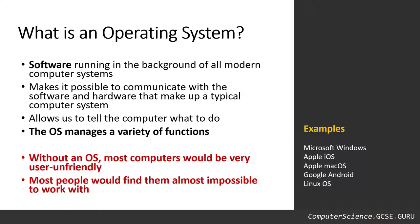The operating system makes it possible to communicate with all the software and hardware that makes up that computer system. It allows us to tell the computer what to do, and the operating system manages a variety of functions to help us do this. Without an operating system, most people would find computers very unfriendly — in fact impossible — to use without it to guide and help us control all those devices.